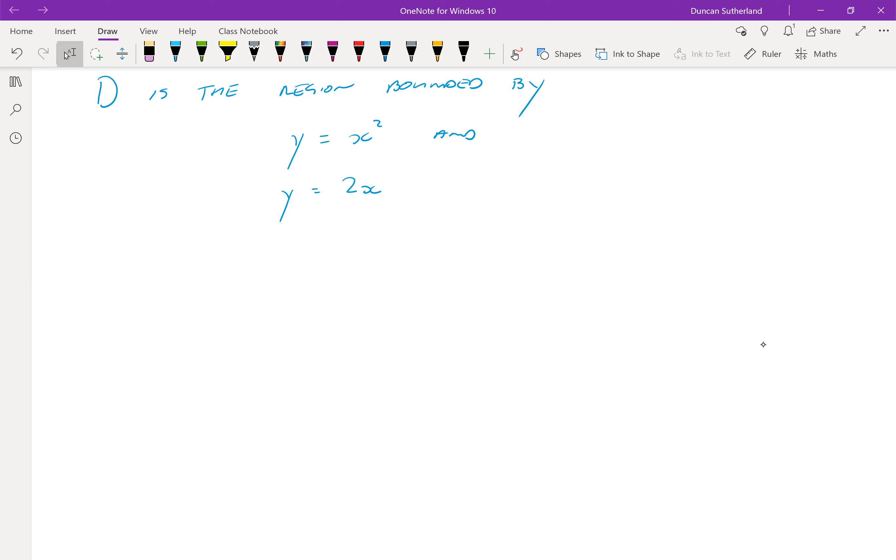So let's work out what this region looks like first. We've got x, we've got y. The line y equals 2x is really easy to draw. It's a straight line that starts at the origin. It's got slope 2. So when we hit 1, the value of y is 2. All right, that's better drawing.